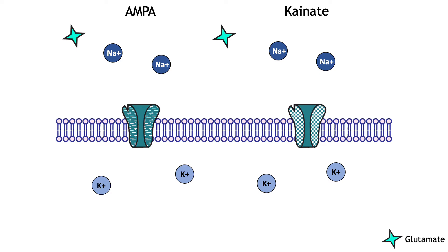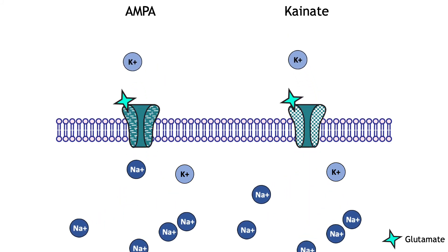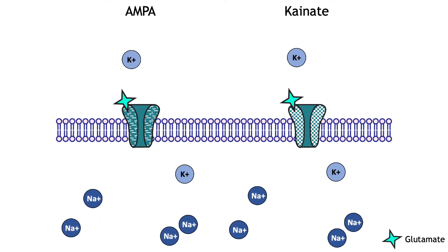Glutamate is the primary excitatory neurotransmitter in the central nervous system and opens non-selective cation channels. There are three subtypes of glutamate receptors. The AMPA and kainate receptors allow both sodium and potassium to cross the membrane. Although potassium can leave the cell when the receptors open, the electrochemical gradient driving sodium ion movement is stronger than the gradient driving potassium movement, resulting in a depolarization of the membrane potential.